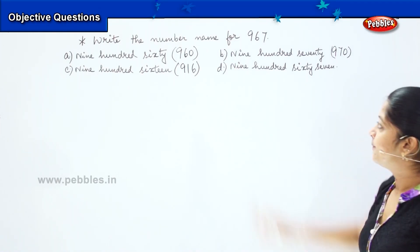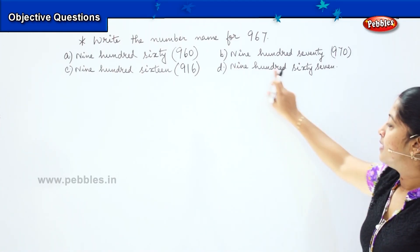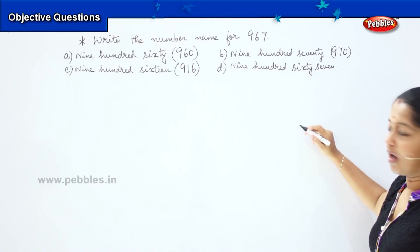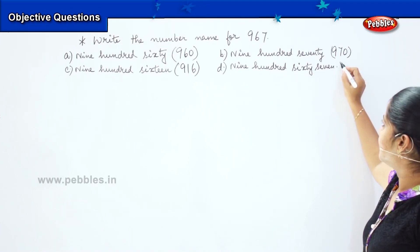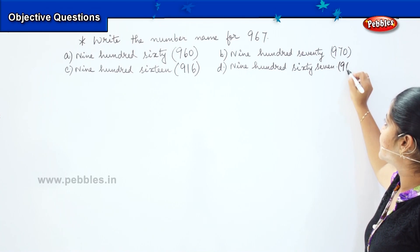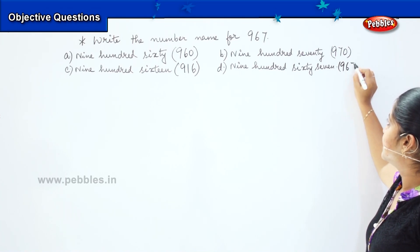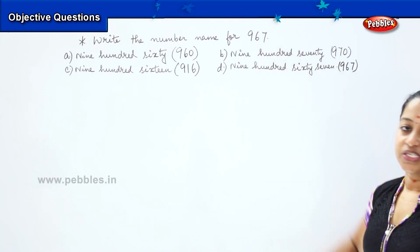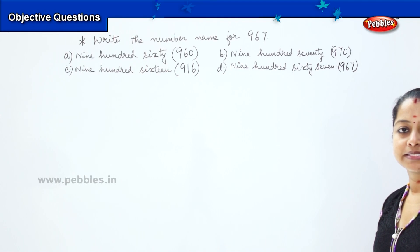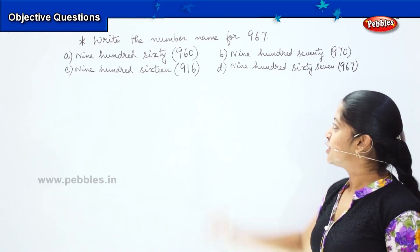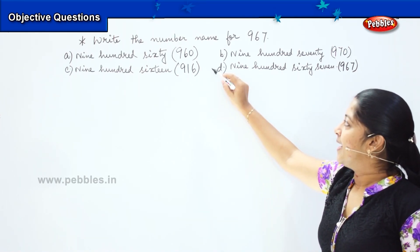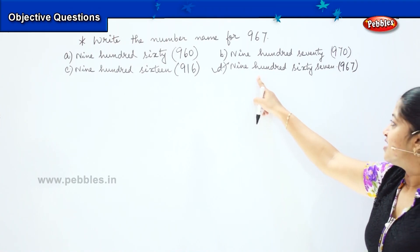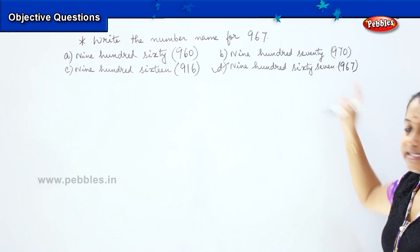Coming to the next option: 967. How will you write it? Is it matching with the question that is being asked? Yes! So my correct answer will be option D, which is 967.